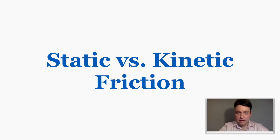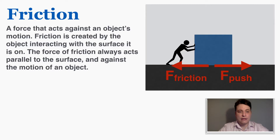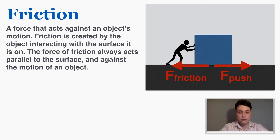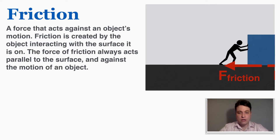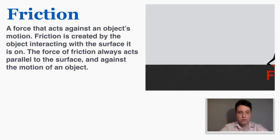This video is about the difference between static and kinetic friction. Friction is a force that acts against an object's motion, created by the object interacting with the surface it is on. The force of friction always acts parallel to the surface and against the motion of the object, whether that object is standing still and friction is preventing it from moving, or if it's moving.